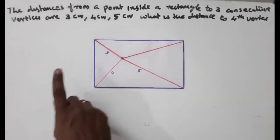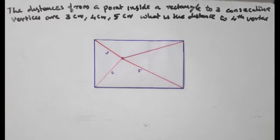Hello, welcome to HSMAXLAB. In today's video, I am going to show you the coordinates of HSMAXLAB. The distance from a point inside a rectangle to 3 consecutive vertices are 3 cm, 4 cm, and 5 cm. What is the distance towards the 4th vertex?